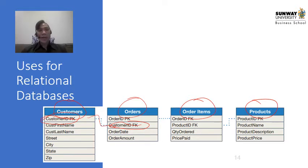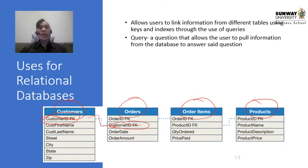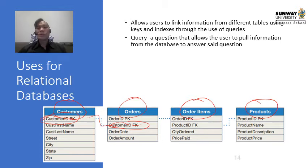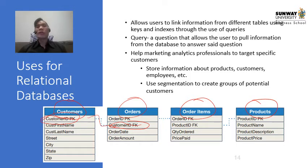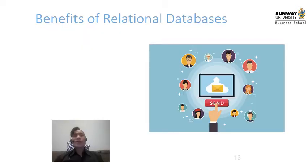For a relational database, you must always allow users to link information from different tables using keys and indexes through the use of queries, so that when you use structured query language you can link up these tables and find information from multiple tables at one go. A query is basically a question that allows users to pull information from a database to answer the said question. This helps marketing analytics professionals target specific customers, store information about certain products, customers, and employees, and use segmentation to create groups of potential customers — figuring out where the best buyers are and which products are being bought.